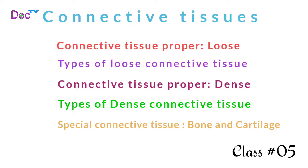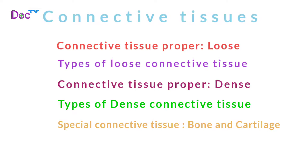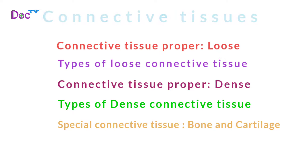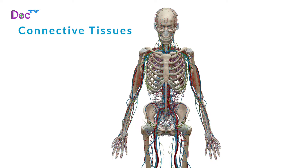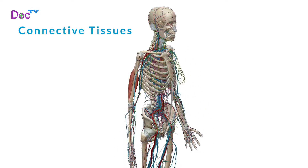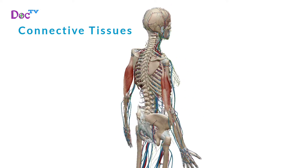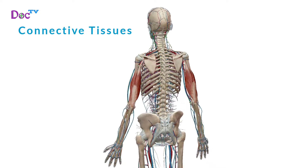In this class we are going to learn about connective tissue. We have subtopics: connective tissue proper loose, types of loose connective tissue, connective tissue proper dense, types of dense connective tissue, special connective tissue bone and cartilage, cartilage histology, and special connective tissue blood and lymph. Connective tissue is composed of cells in an extracellular matrix of amorphous ground substance and collagen, elastic or reticular fibers.